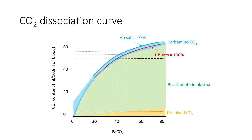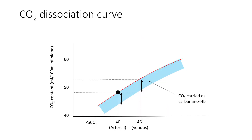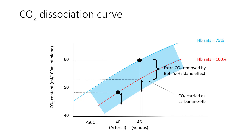Looking at the total CO2 content and the difference between the arterial and venous levels, you can figure out how much carbon dioxide is transported in each form: a small amount dissolved in water, CO2 carried as bicarbonate, and CO2 carried as carbaminohemoglobin. If there were no Haldane-Bohr effect, the amount of CO2 carried as carbaminohemoglobin would be the same at both 40 and 46 mmHg. Because of the Haldane-Bohr effect, the carrying capacity of carbon dioxide by hemoglobin is higher at 75% saturation compared to 100%, so there is extra CO2 removed by this effect.